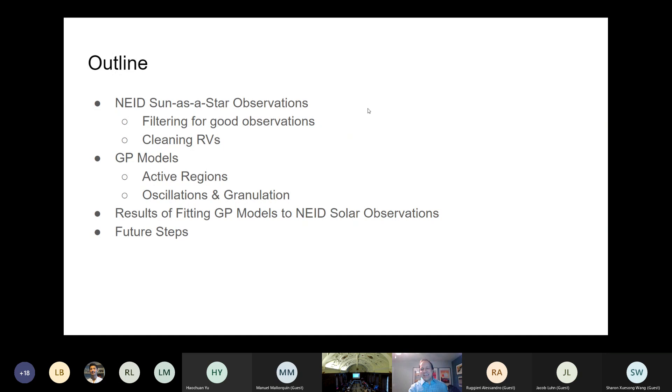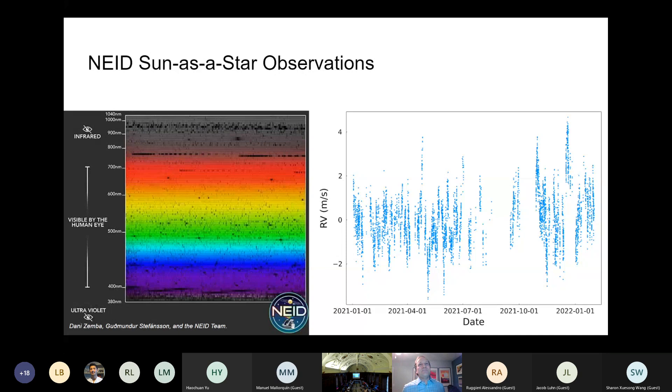First of all, a big thanks to the organizers, both for the meeting in general, but also for making it possible for remote participation. I really like that. So I'm going to be talking today about characterizing granulation in particular via GP modeling, taking advantage of the NEID Sun as a Star observation. So you noticed that on Monday, Sam gave you a little bit of discussion of the NEID Solar Telescope. So just as a recap, NEID is a new spectrometer, highly stabilized, has a wide wavelength grasp all the way from the near UV to near IR. And we have a little bit over a year's worth of solar data at this point that allows us to start digging into it and learning about both the instrument and the Sun.